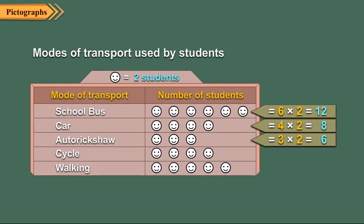Number of students using cycle is equal to 4 into 2, which is equal to 8. And finally, number of students who come to school by walking is equal to 5 into 2, which is 10.